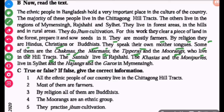The Sautas live in Rajshahi. The Khashias and Manipuris live in Sylhet. The Harajongs and Garos live in Mymensingh.